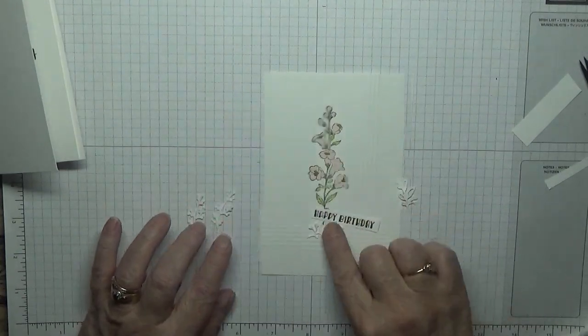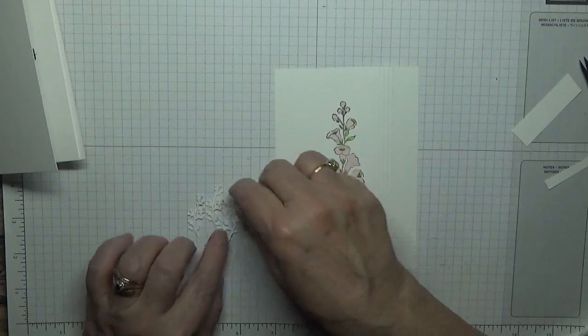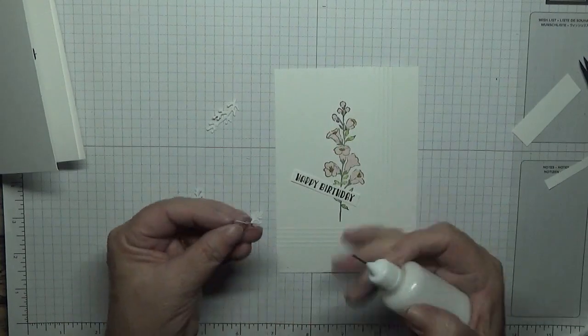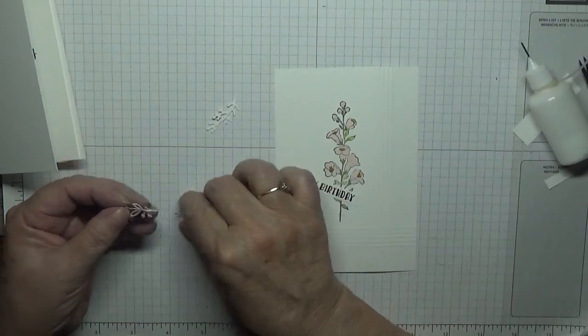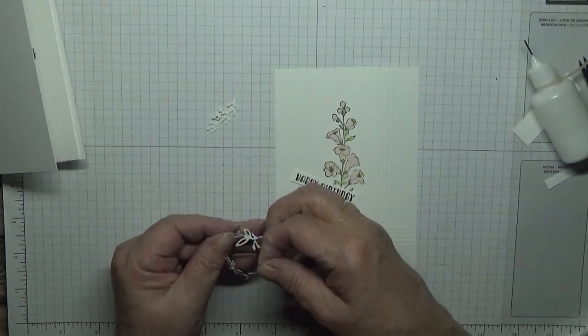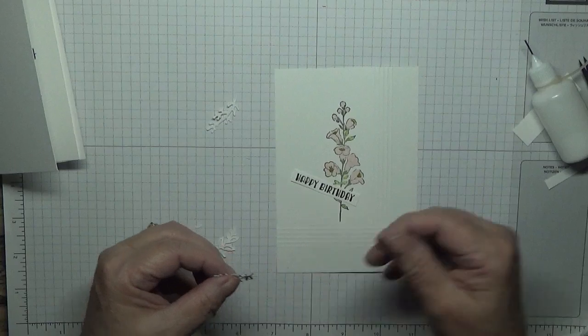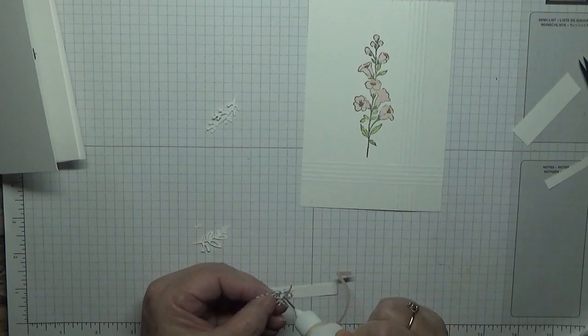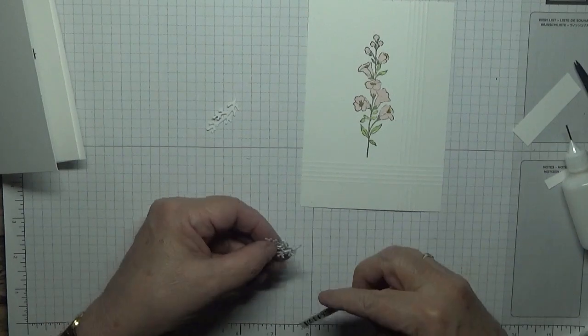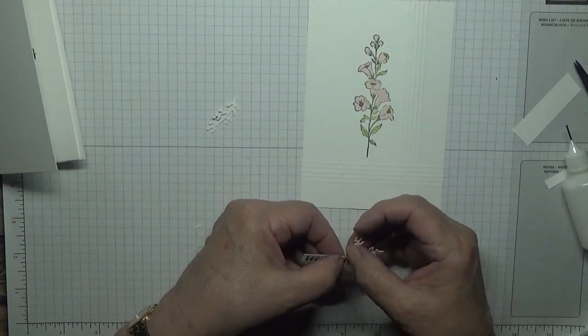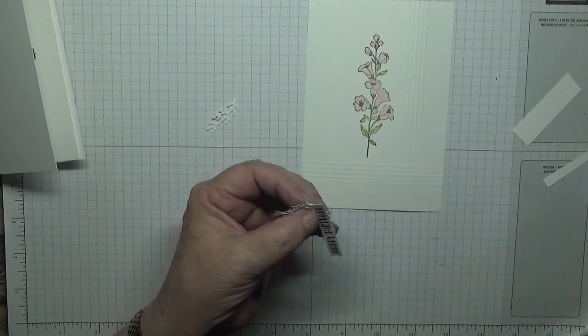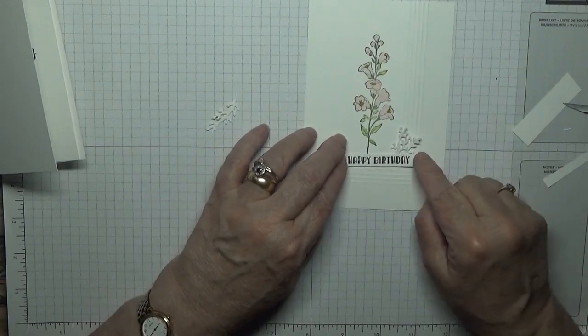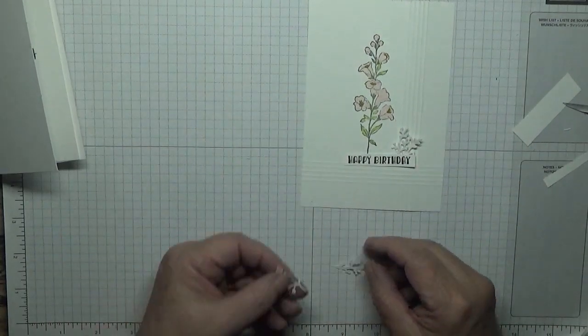For these little leaves, what I did, I glued one and then stuck the other one onto it, and then stuck each one onto my label. So I had one sticking up there. Do the same with this one.